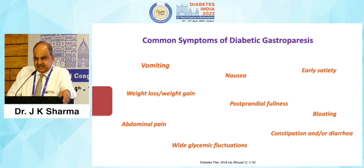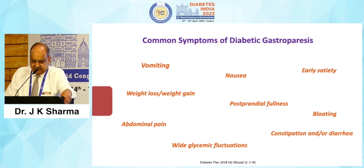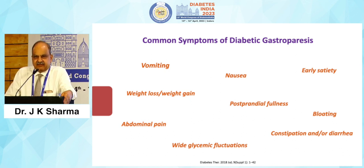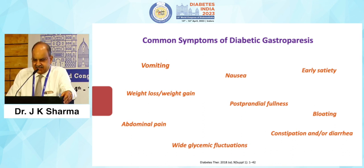Symptoms are very common and vague. Any patient presenting with vomiting, nausea, early satiety, weight loss or gain, postprandial fullness, bloating, constipation and/or diarrhea, wide glycemic fluctuations, and abdominal pain — consider that this patient may be having diabetic gastroparesis.